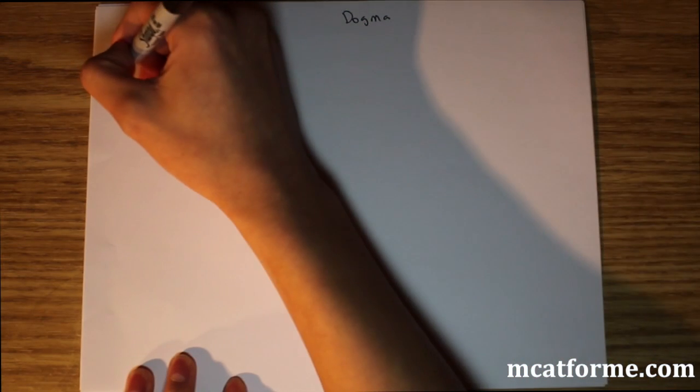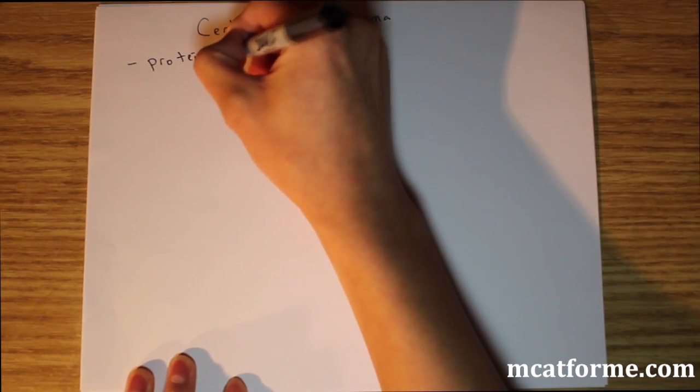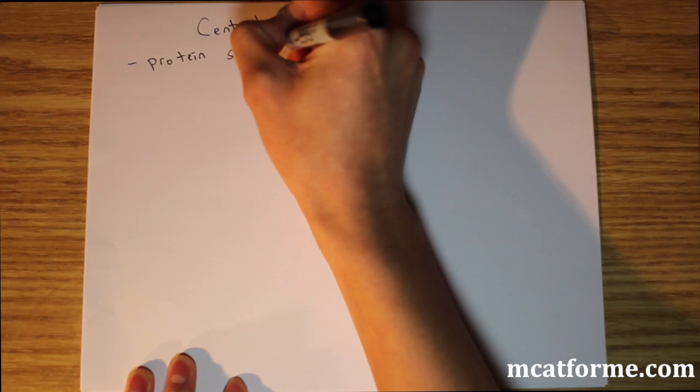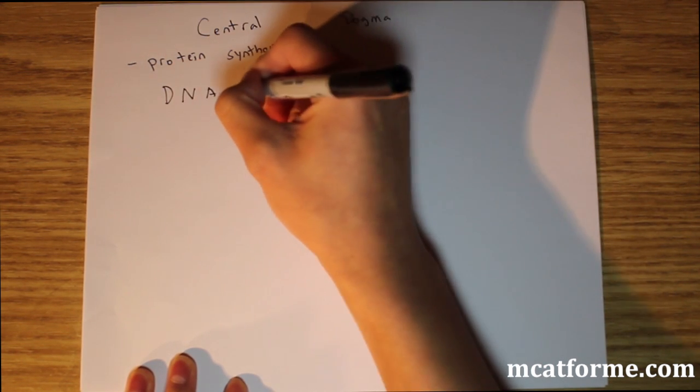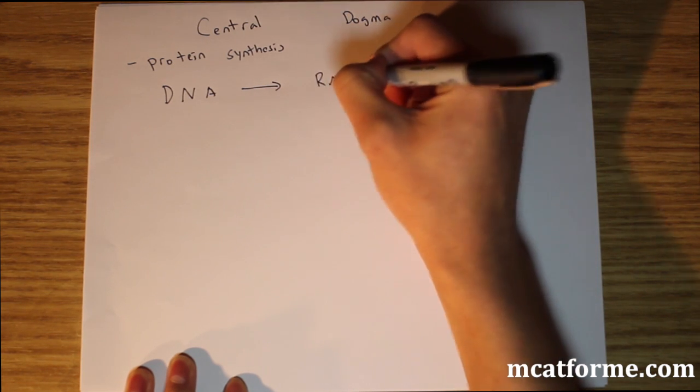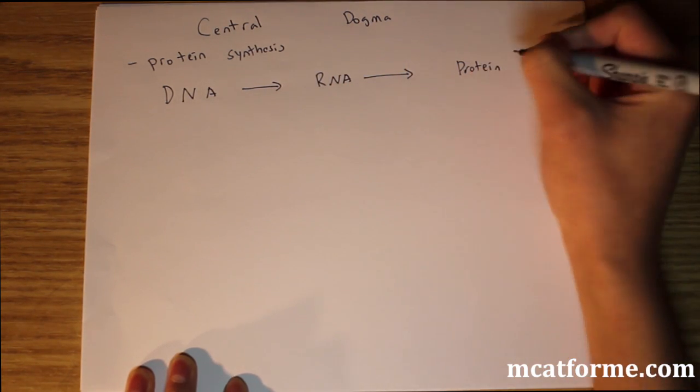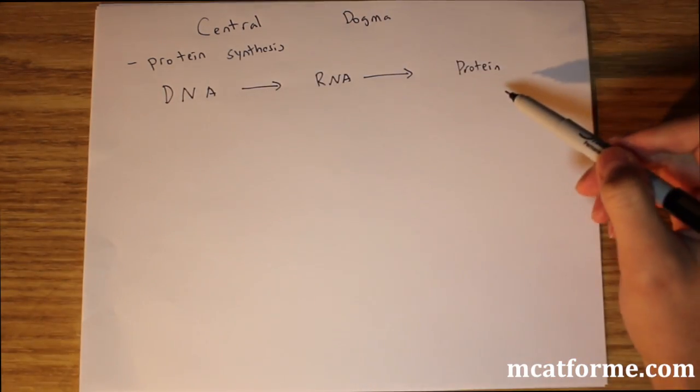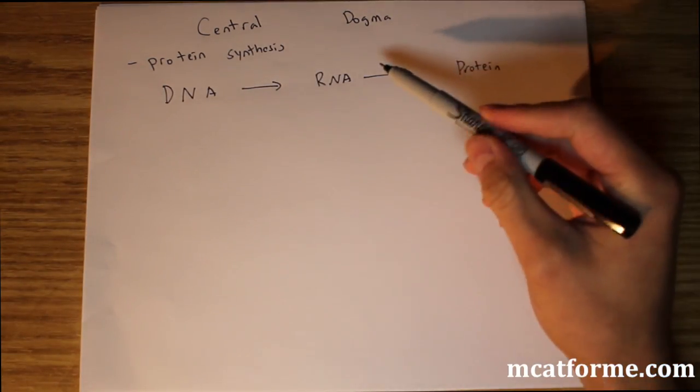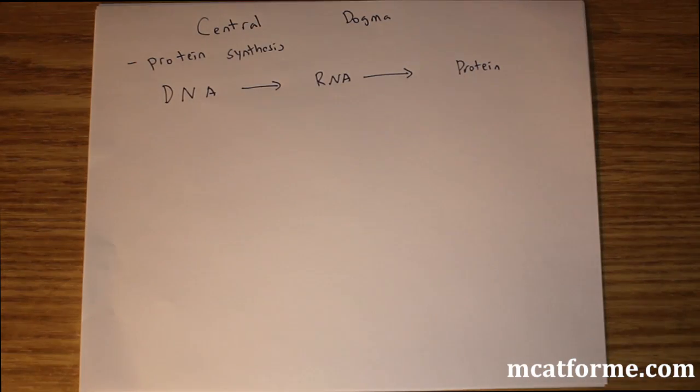So just to start, what is the central dogma? The central dogma has to do with protein synthesis, so it tells us how proteins are made. Specifically going from DNA, DNA goes into RNA and RNA goes into protein. That is the central dogma, that fact right there. We're not going to skip from DNA all the way to protein, and we're not going to skip RNA going straight to protein without having any DNA to begin with.